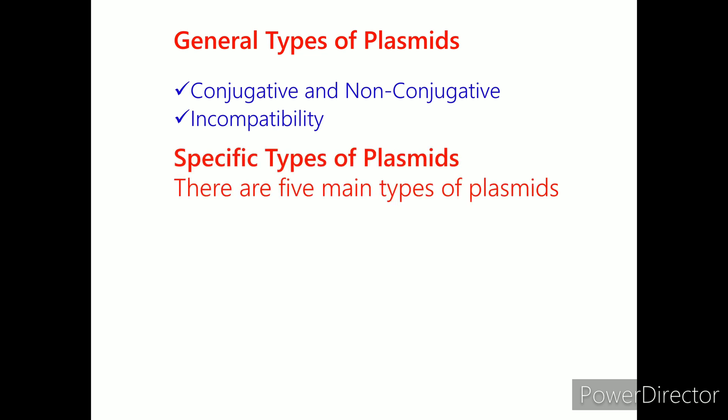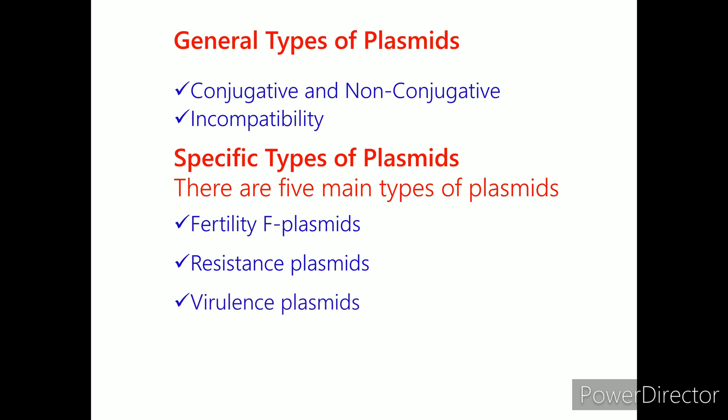Specific types of plasmids. There are five main types of plasmids: fertility F plasmids, resistance plasmids, virulence plasmids, degradative plasmids, and Col plasmids.